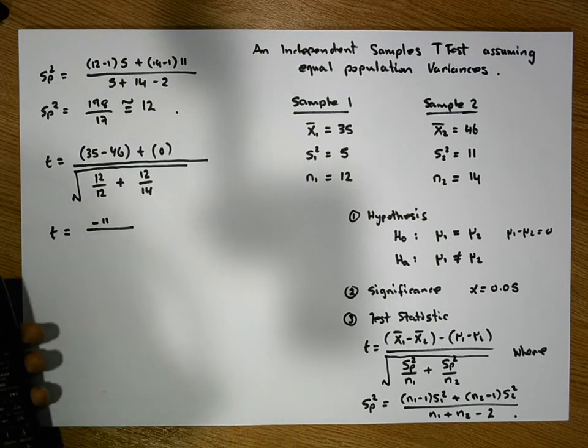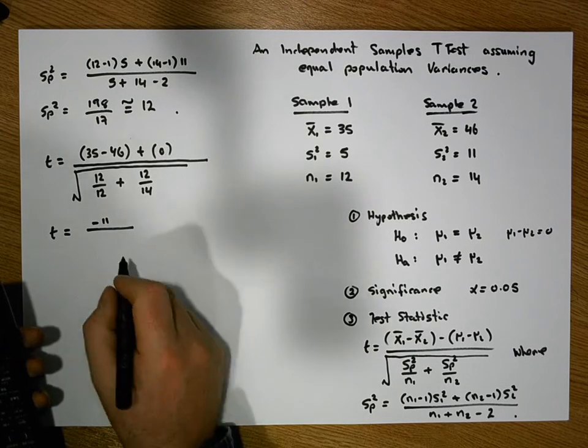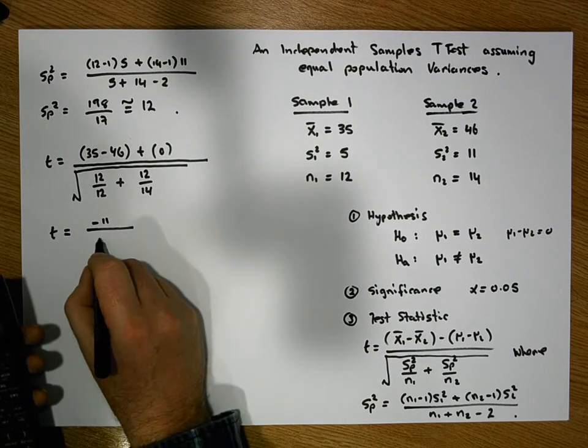Well, this is one, so it's gonna be the square root of one plus 12 divided by 14. That gives us a value of 1.36. So let's just say that's 1.36.